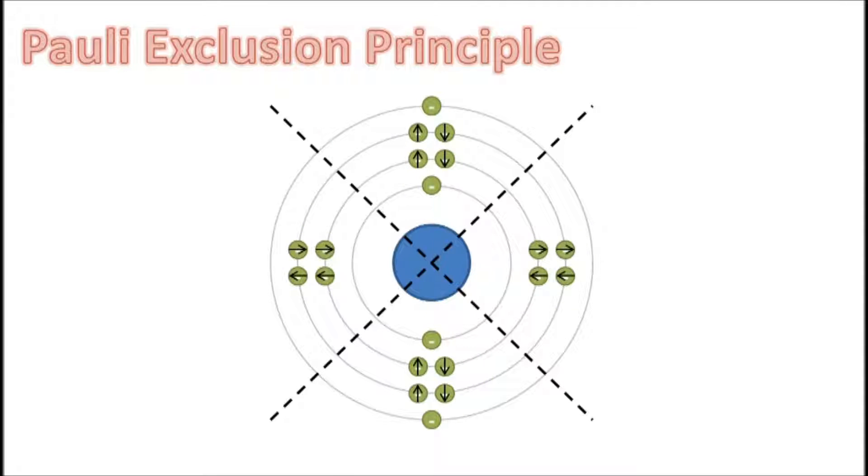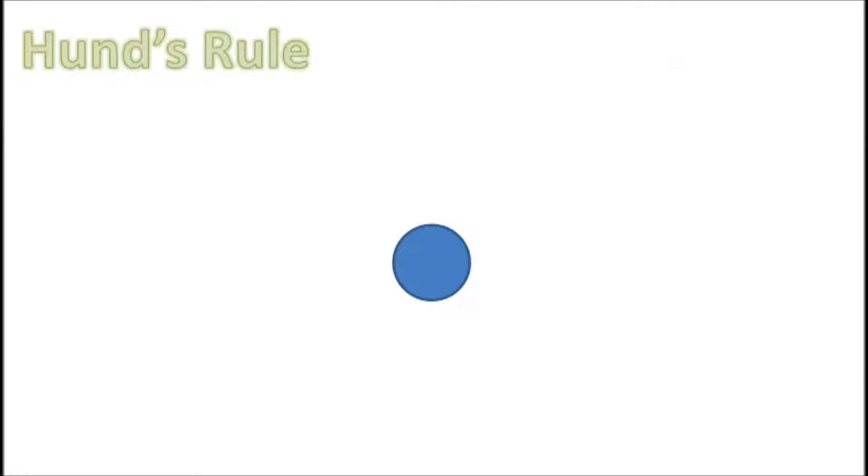Hund's rule explains why each quarter of a shell is filled with an electron first, before the electrons are paired up.